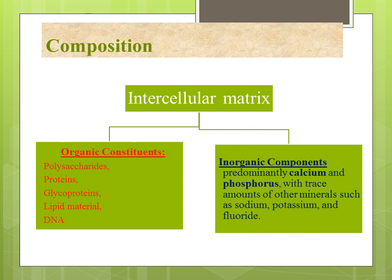Coming to the composition, the intercellular matrix of the plaque is divided into two components. The organic constituents mainly include polysaccharides, proteins, glycoproteins, lipid material, and DNA. The inorganic components predominantly include calcium and phosphorus, with trace amounts of other minerals such as sodium, potassium, and fluoride.